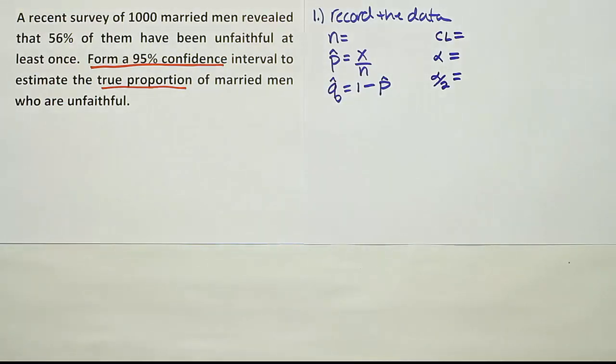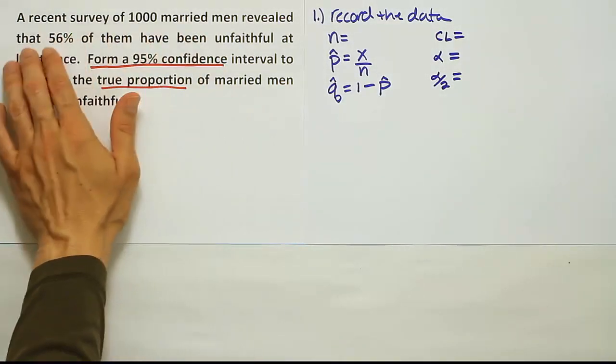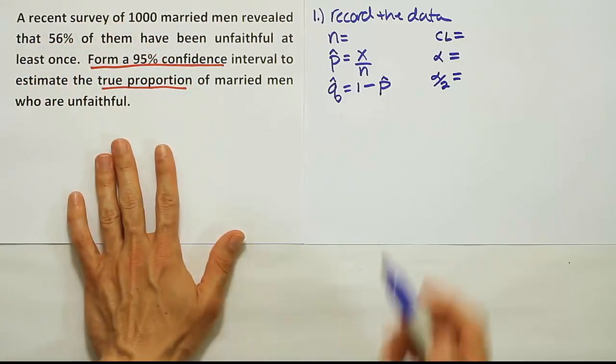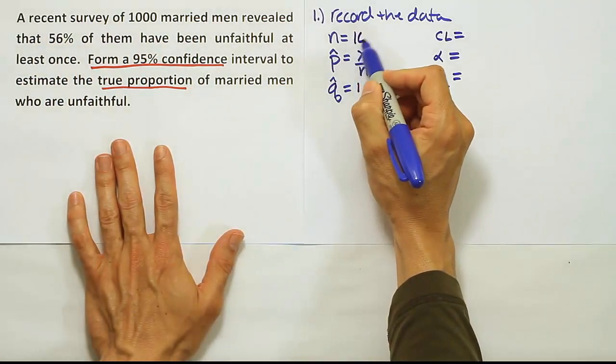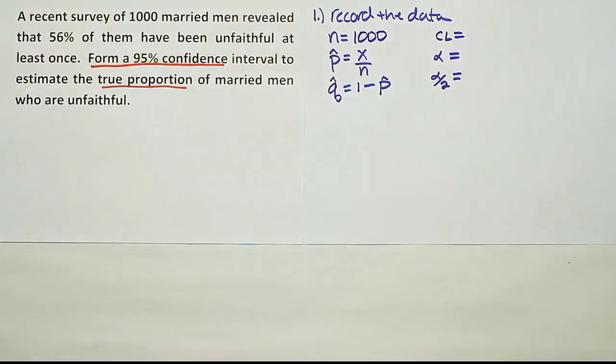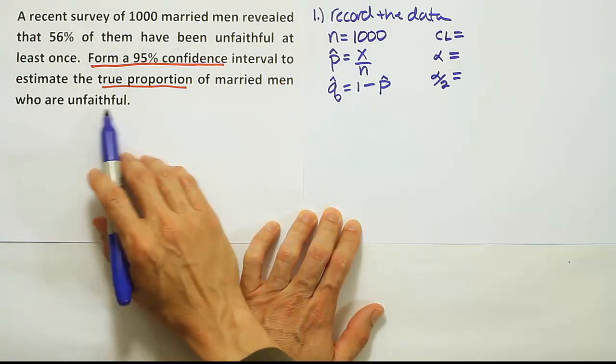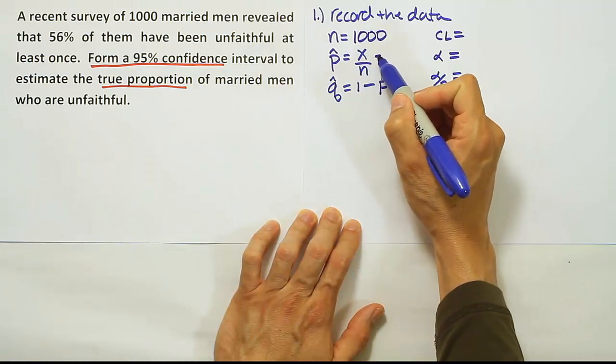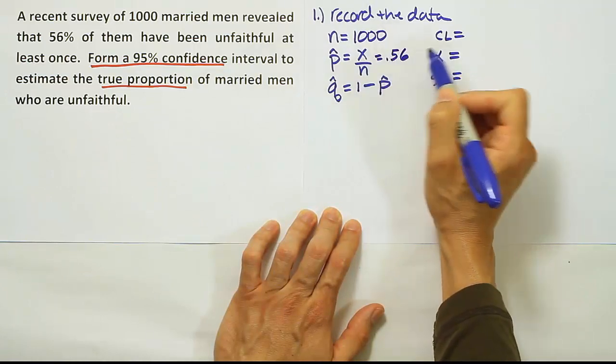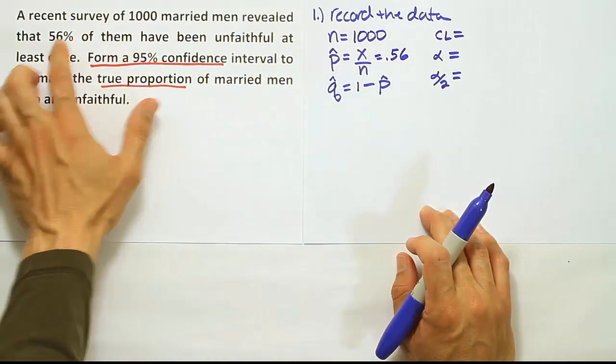Let's determine N for this problem. This is a recent survey of 1,000 married men, so N equals 1,000. From there, it says that 56% of them have been unfaithful at least once. So P-hat, the sample proportion, is 0.56.